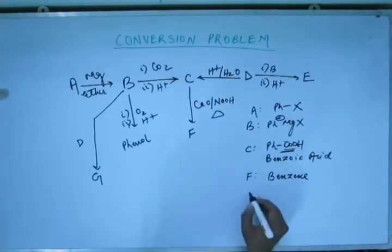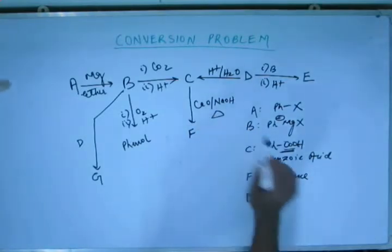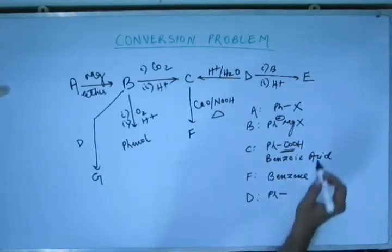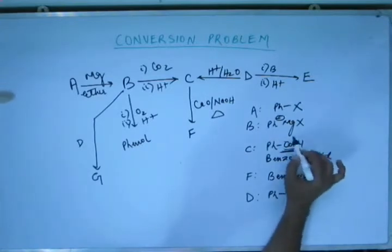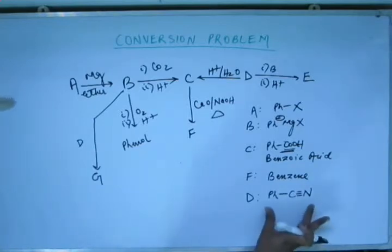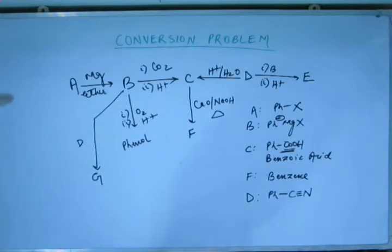To write the structure of D, you just have to look at the structure of C. This pH will remain as it is. And instead of this COOH, we will have C triple bond N. That will be benzonitrile. So this benzonitrile is D. If you hydrolyze this benzonitrile, you will have C that is benzoic acid.